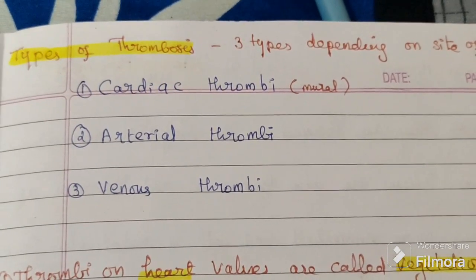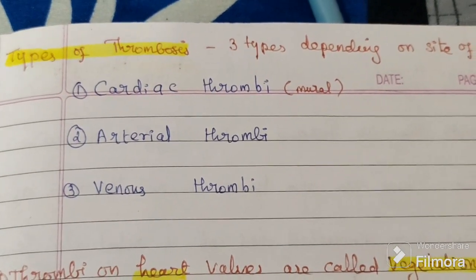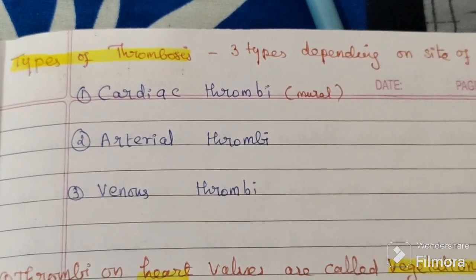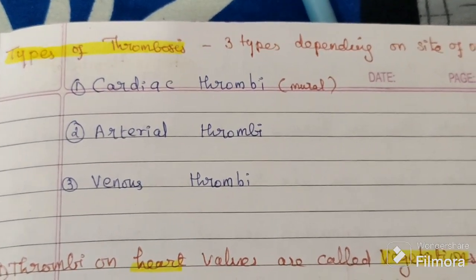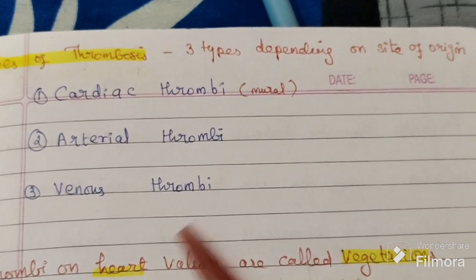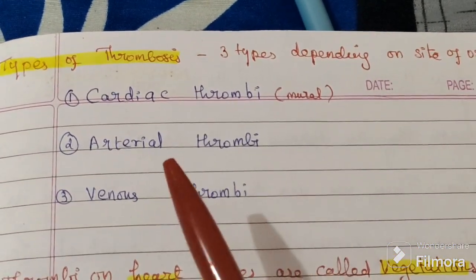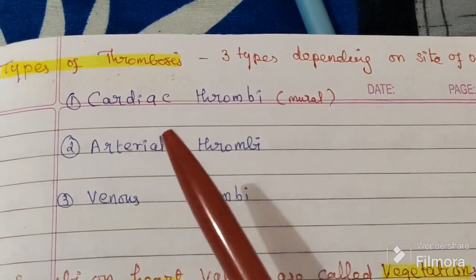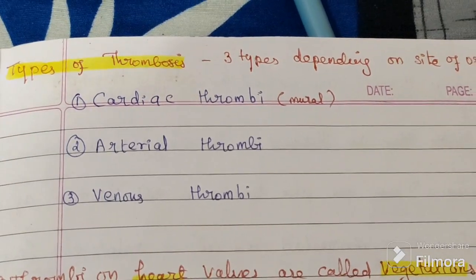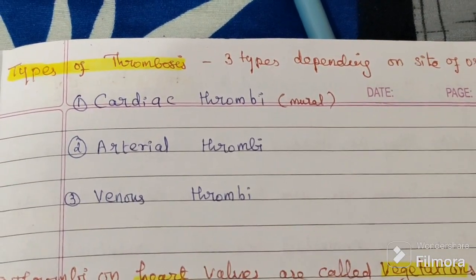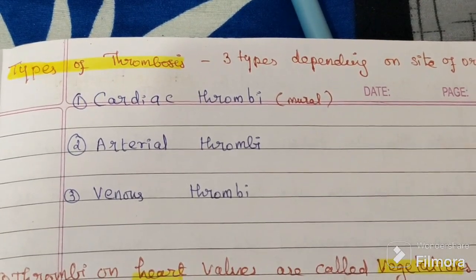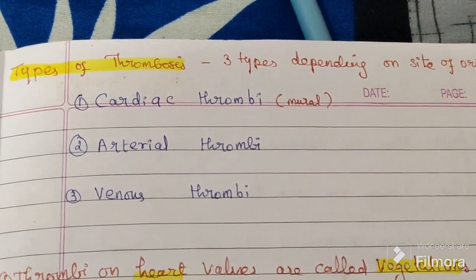This is a continuation of the thrombosis video, with pathogen introduction and pathogenesis already completed. Now, types of thrombosis: there are three types based on their site of origin. They are classified into cardiac — that means heart valves and the inner layer of the heart, the endocardium — and thrombosis here is called cardiac thrombosis.